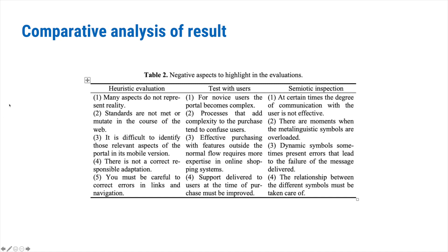Negative aspects identified in the evaluation. In the heuristic evaluation: one, many aspects do not represent reality; two, standards are not met or are inconsistently applied across the web; three, it is difficult to identify relevant aspects of the portal in its mobile version; four, there is no correct responsive adaptation; and five, errors in links and navigation must be corrected.